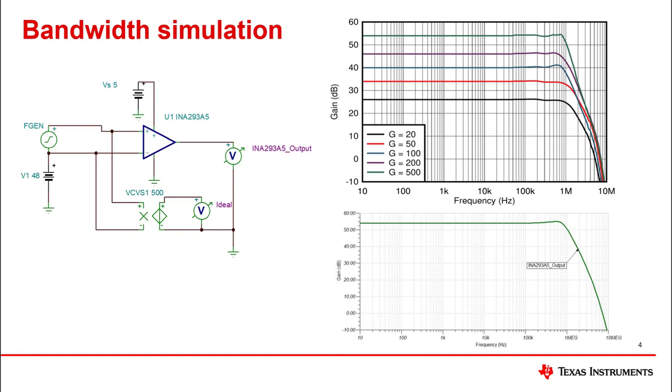It is difficult to tell what the 3 dB point is on the plot, but it does give us a measured behavior of gain versus frequency.